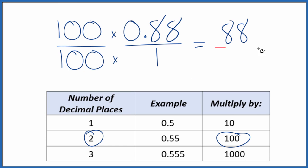So 100 times 1 equals 100, and we end up with 88 over 100. This is our fraction. We can simplify this further though. Let's give ourselves some room.